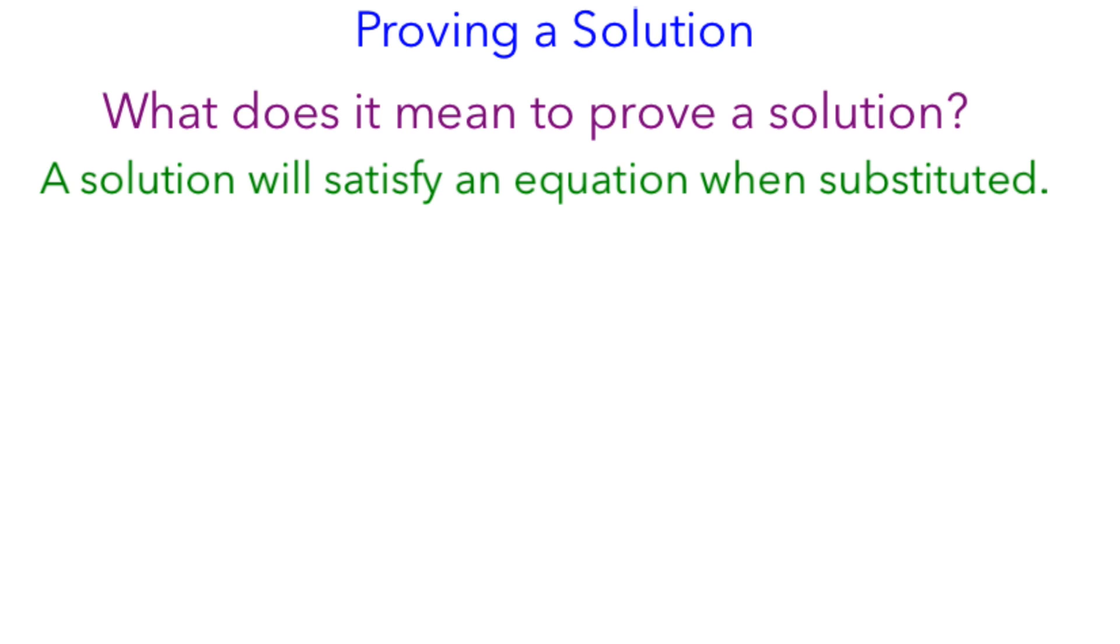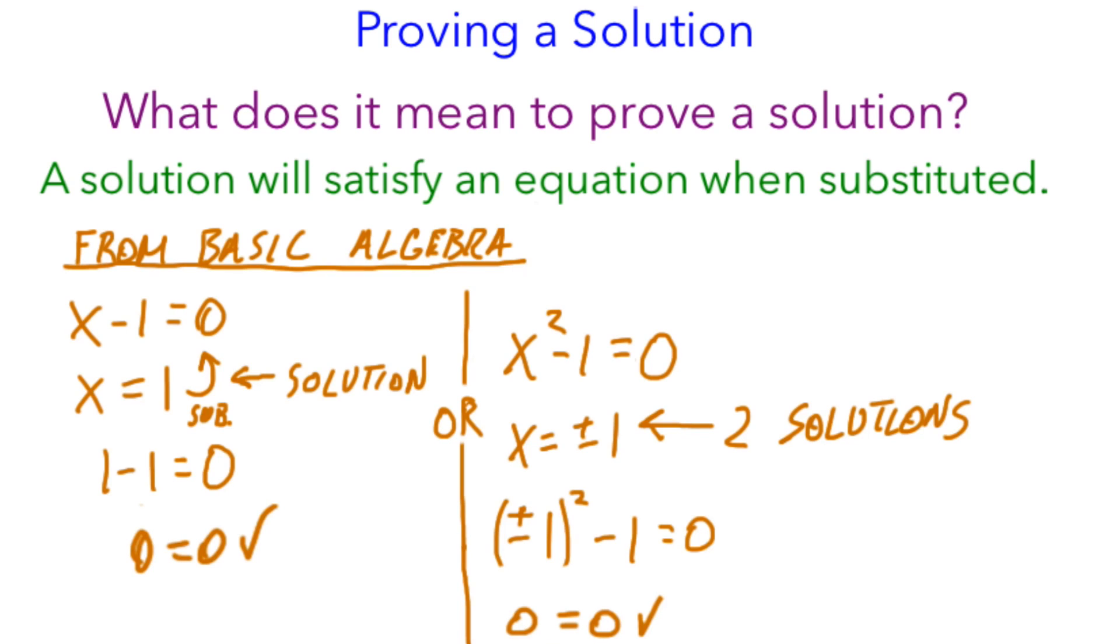As an example, let's look at some basic algebra. From basic algebra, we have x minus 1 is equal to 0, and we have x equals 1 as a solution or a possible solution.